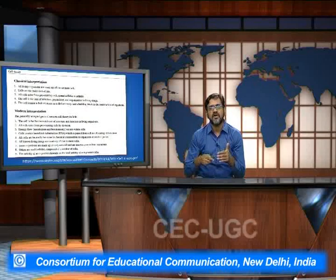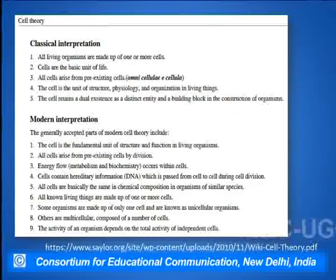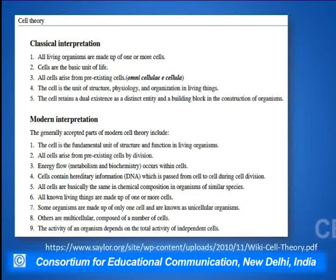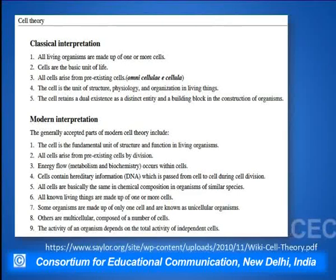The cell theory got a number of additions. The major classical interpretation of the cell theory was: all living organisms are made up of one or more cells; cells are the basic unit of life; all cells come from pre-existing cells; and the cell is a unit of life which can divide and which can physiologically function in a positive way.